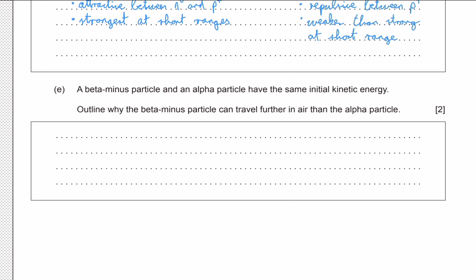And then finally, we need to outline why a beta minus particle can travel further in air than an alpha particle if they have the same kinetic energy. Well, if we recall, kinetic energy is just one half mv squared. And we should know that the alpha particle is heavier than the beta minus particle. And so from this it follows that since they have the same kinetic energy, if the beta minus particle is lighter, then it must have a higher speed for it to have the same amount of kinetic energy. And well, due to its higher speed, it can travel further pretty much, travels further.